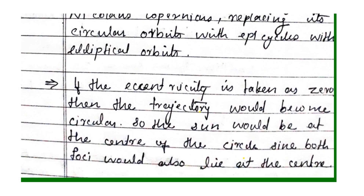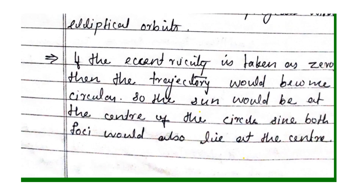If the eccentricity is taken as zero, the elliptical orbit becomes a circular orbit. If the eccentricity is zero, it is a circular orbit, and so the Sun would be at the center of the circle, since both foci would also lie at the center.